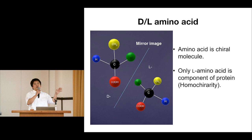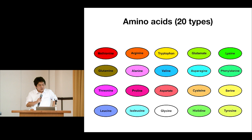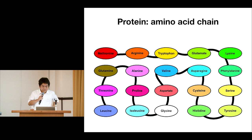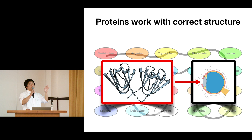People call this homochirality. Nobody knows the reason for this homochirality, but our body is made only from L-amino acid. There are 20 amino acids in our body. The protein is a chain of amino acids, and they form the correct structure and work for their function. One example we focus on is the lens protein — the amino acid chain forms the correct structure, and this works to keep the lens clearance for a long time.